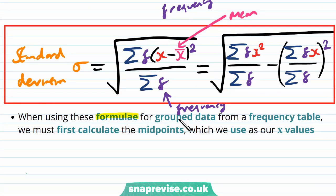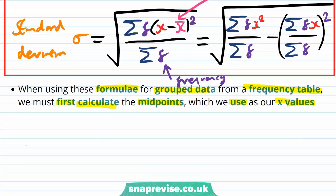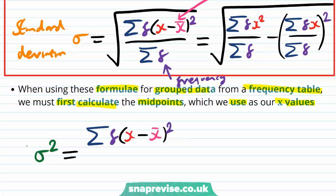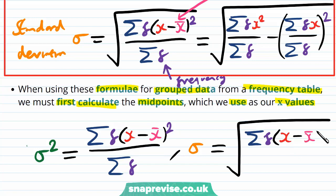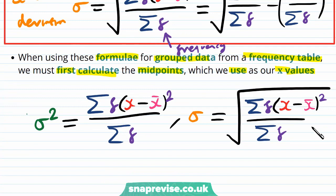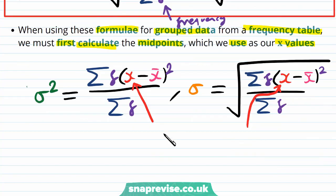When using these formulae for grouped data from a frequency table, we must first calculate the midpoints, which we use as our X values. So when we have sigma given by the sum of F times (X minus X-bar) squared over sum of F, or the square root of that expression, the X values come from the midpoints in the grouped data frequency table.